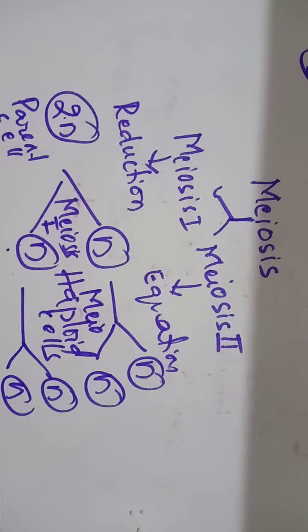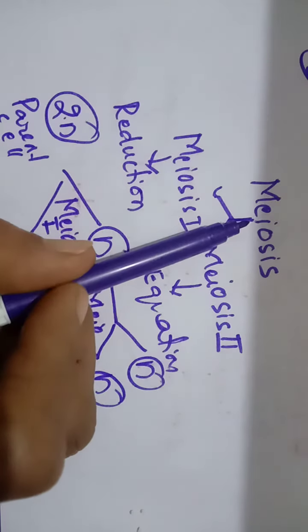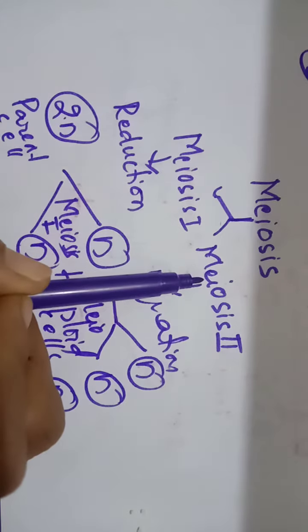Meiosis is very complicated. Meiosis occurs in two stages: meiosis 1 and meiosis 2.